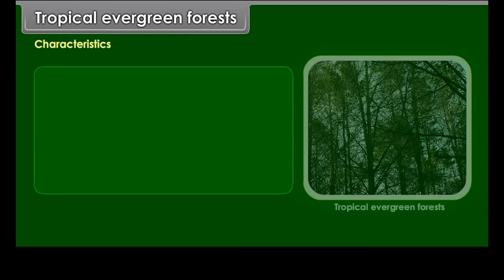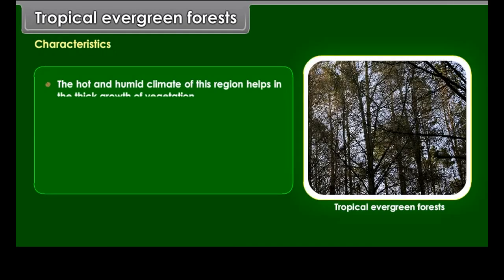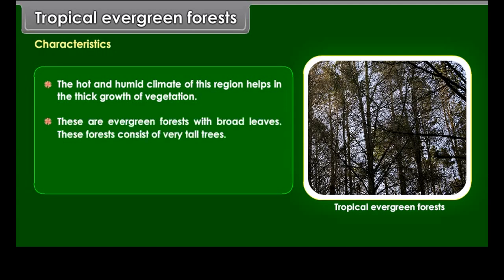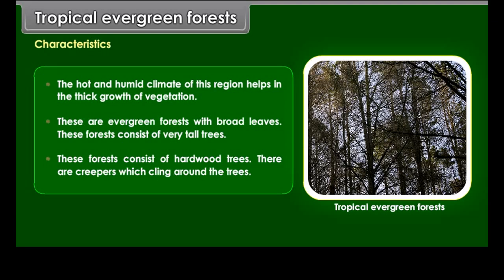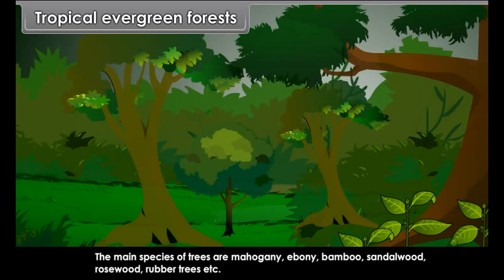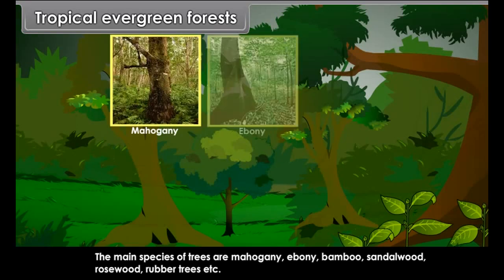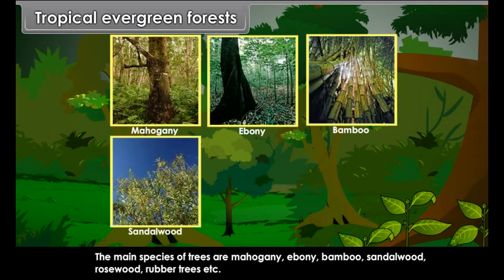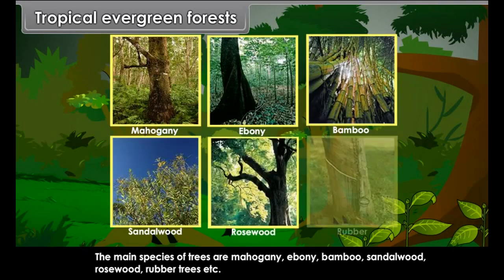Characteristics. The hot and humid climate of this region helps in the thick growth of vegetation. These are evergreen forests with broad leaves. They consist of very tall hardwood trees. There are creepers which cling around the trees. The main species of trees are mahogany, ebony, bamboo, sandalwood, rosewood, rubber trees, etc.